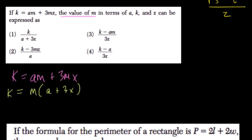m times this number is k. So to find what m is, I'm going to divide both sides by this whole number, a plus 3x. This cancels out, and now we have our answer.